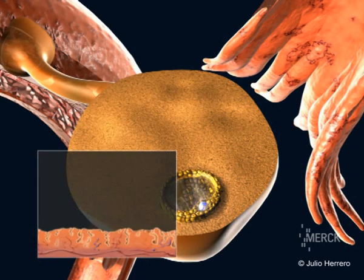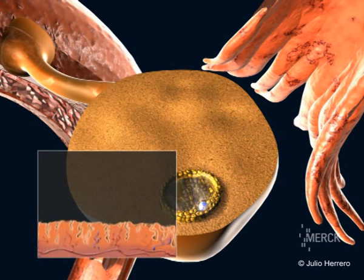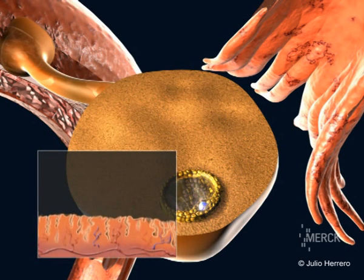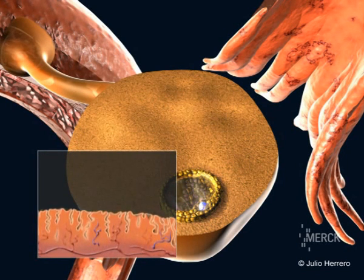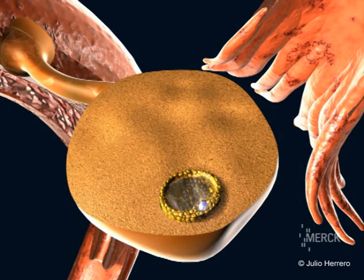The follicle produces estrogen and causes the lining of the uterus, the endometrium, to thicken. Around day 12 to 14 of the cycle, the follicle has grown to the size of about 21 millimeters.